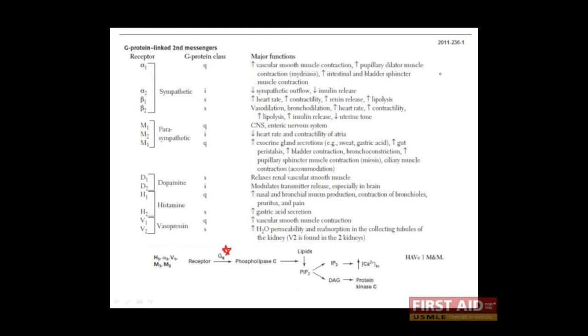Remember that there are three types of G proteins: the GQ G proteins, the GI G proteins, and the GS G proteins. Receptors which are associated with the GQ protein will cause activation of this G protein, which will then go on to activate phospholipase C.